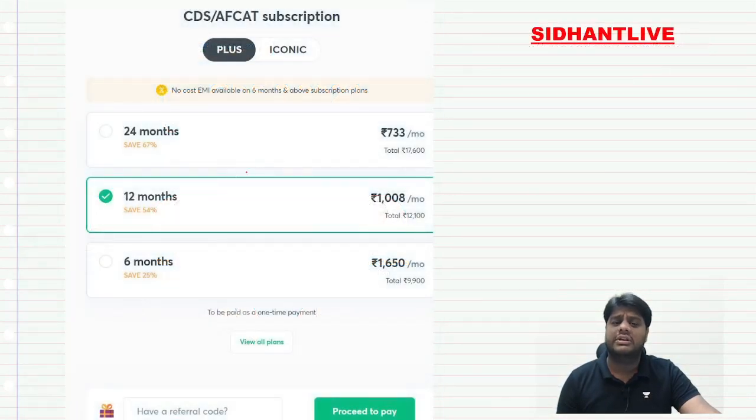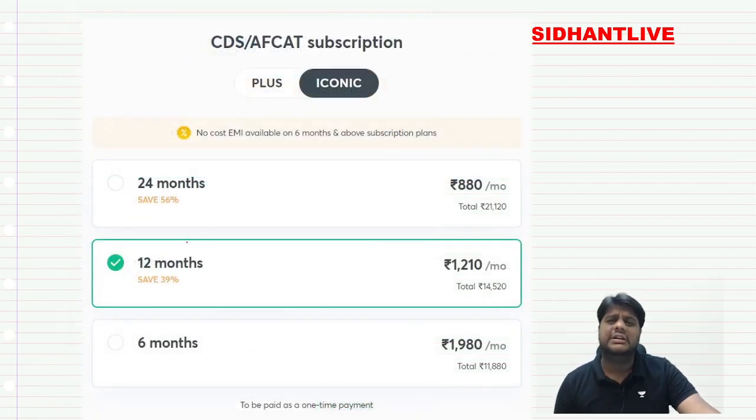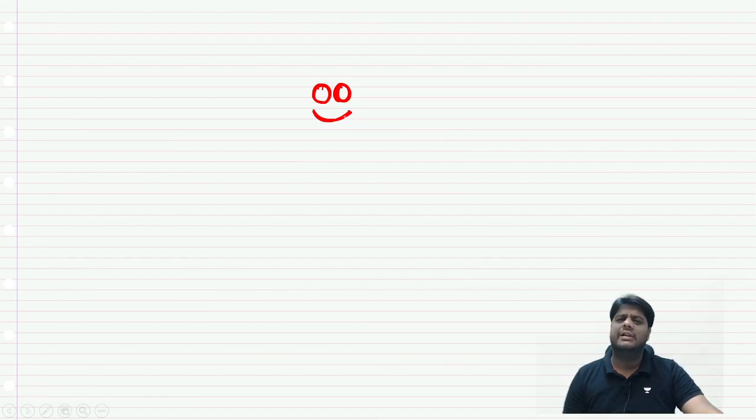If you want to see the cost structure, then Plus is this and Iconic is this. In Iconic, the benefit you get is priority in everything. So let's start, everyone whosoever is in the class, do it fast. Give our class a lovely like and a wonderful smile and we are ready to rock.